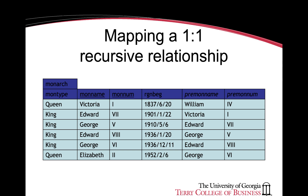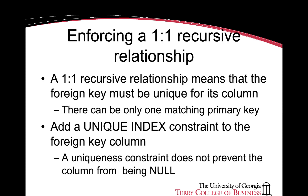In terms of data, consider the first row. The name of the monarch is Victoria the First, whose predecessor was William the Fourth. To enforce a recursive one-to-one relationship — since there can only be one matching primary key corresponding to each foreign key value — one needs to add a unique index constraint to the foreign key column.